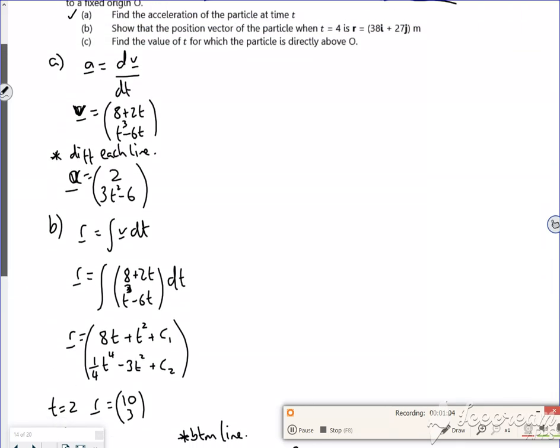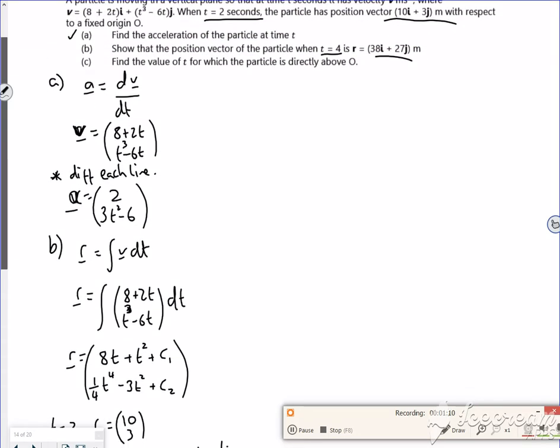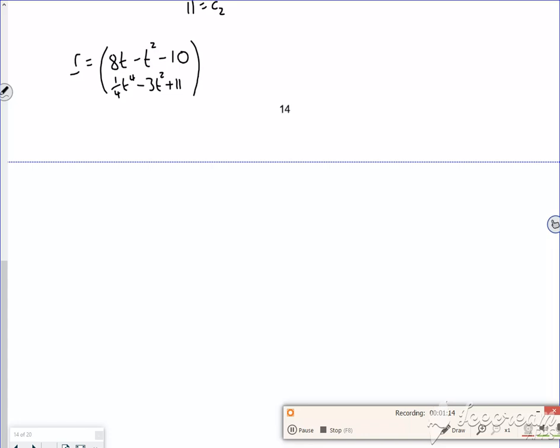But then it says in the question, show that when T is 4. So let's do it underneath. When T is 4, R is 8 lots of 4 minus 4 squared minus 10. What's that going to be? 8, 16, 16. Is that going to be 6? Is that what it was? No, I'm sure it's 10. Have I got something wrong there?